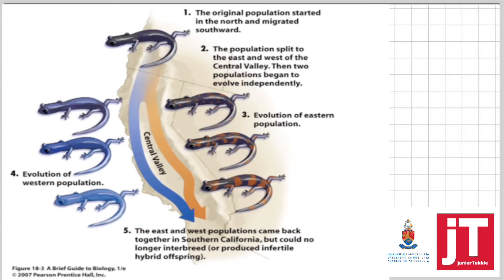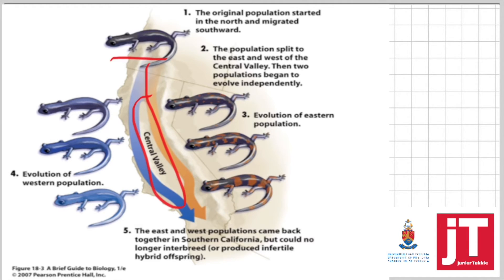Now if you look at this lizard, this is the ancestral lizard population. You always start off by saying there was variation amongst the ancestral lizard population. In this case there was no continental drift, but a geographical barrier formed — and the geographical barrier formed is the valley. You must always mention what the barrier is in brackets.